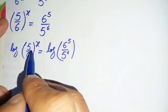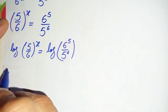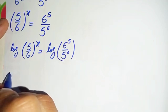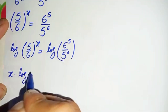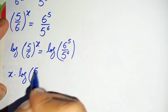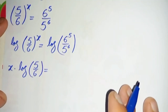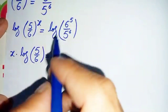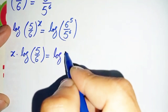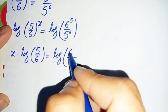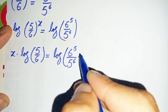On the left-hand side, we move this power to the front of the log, so it becomes x times log of 5 over 6, is equal to log of 6 raised to power 5 divided by 5 raised to power 6.